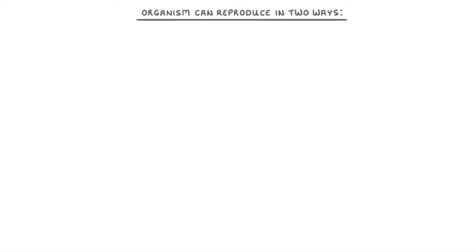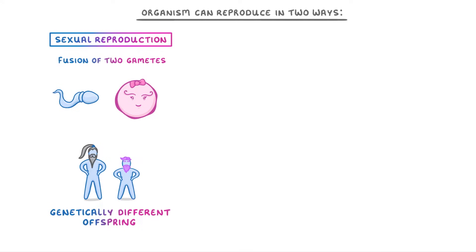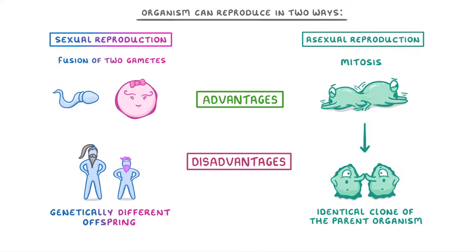We've seen in previous videos that organisms can reproduce in two different ways: either through sexual reproduction, which involves the fusion of two gametes like a sperm and an egg, and so leads to genetically different offspring, or asexual reproduction, which uses mitosis to form an identical clone of the parent organism. In this video, we're going to focus on the advantages and disadvantages of each of these types.